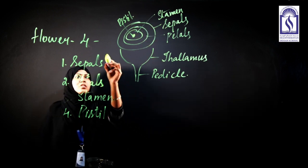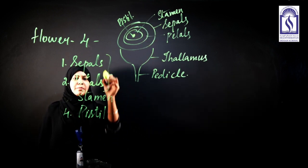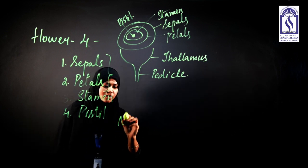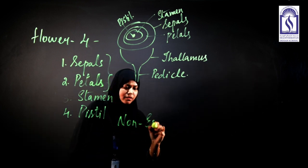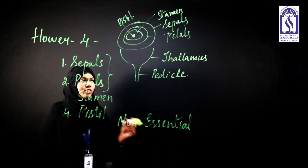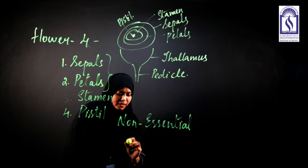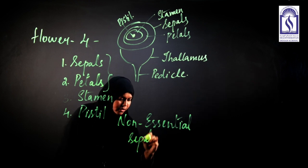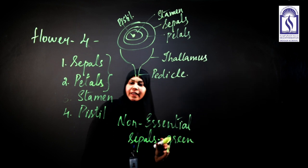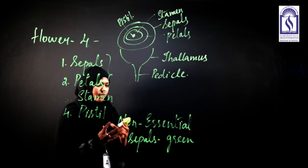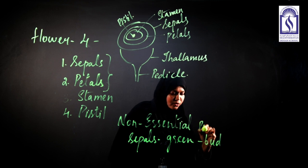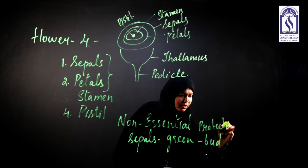Let us first talk about the two main parts: the sepals and the petals. These are called the non-essential parts of a plant, as they are not taking part in the process of reproduction. The sepals are usually green in color and they give protection to the flower in the bud condition.